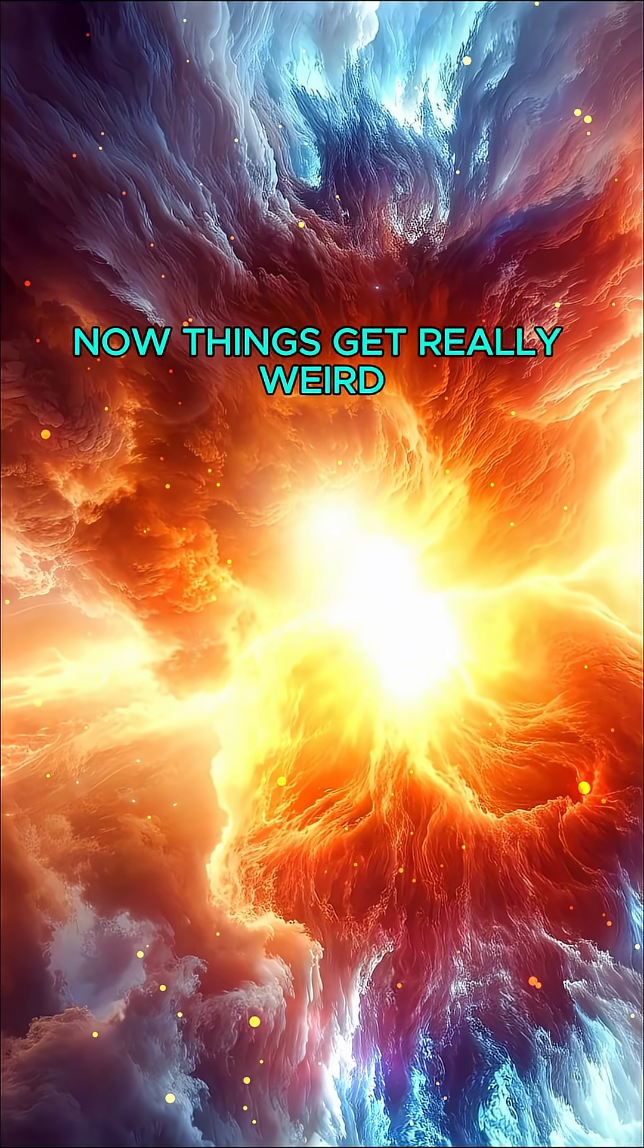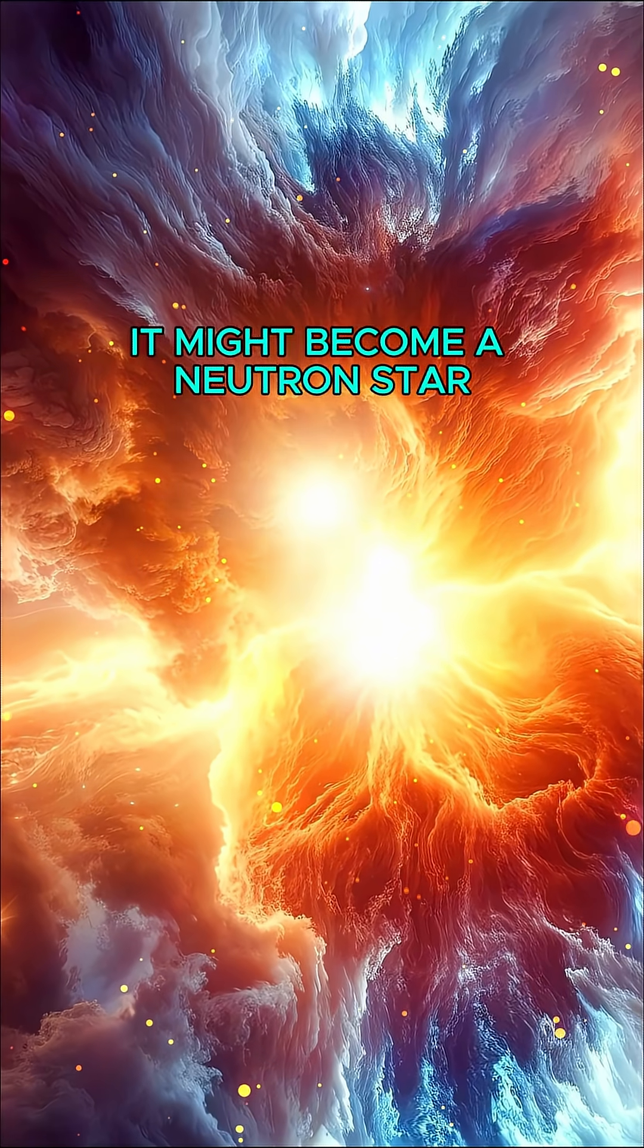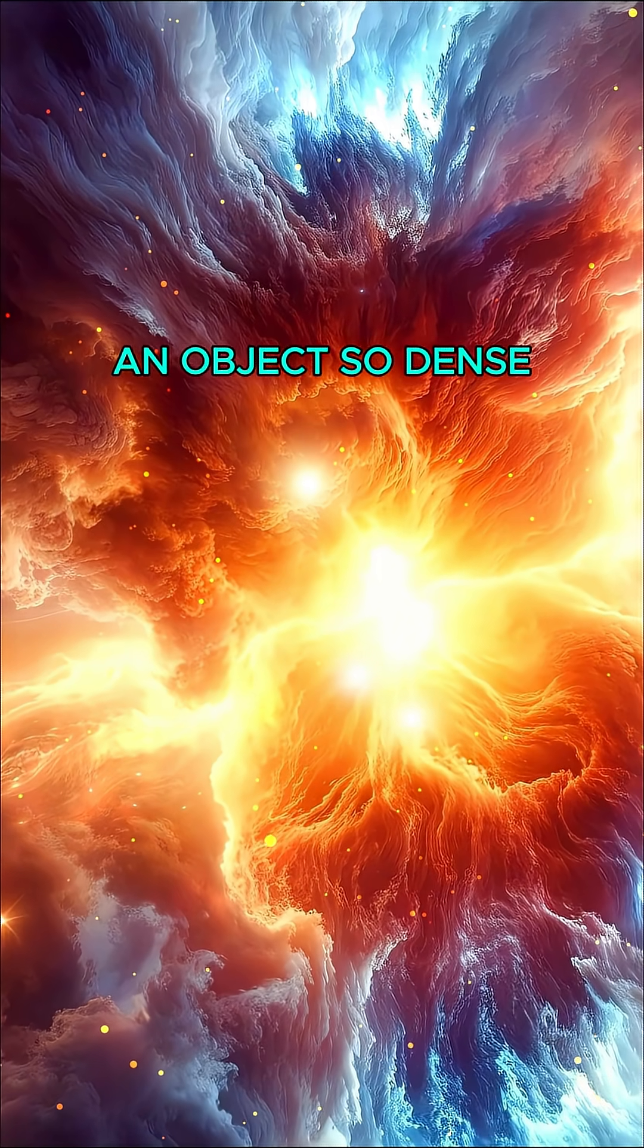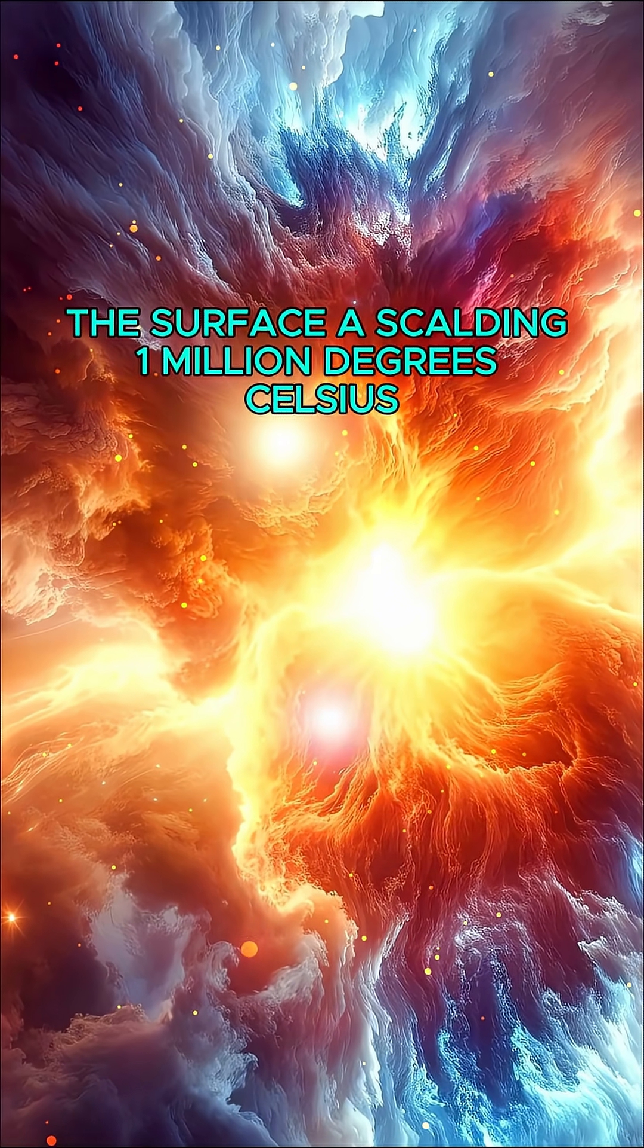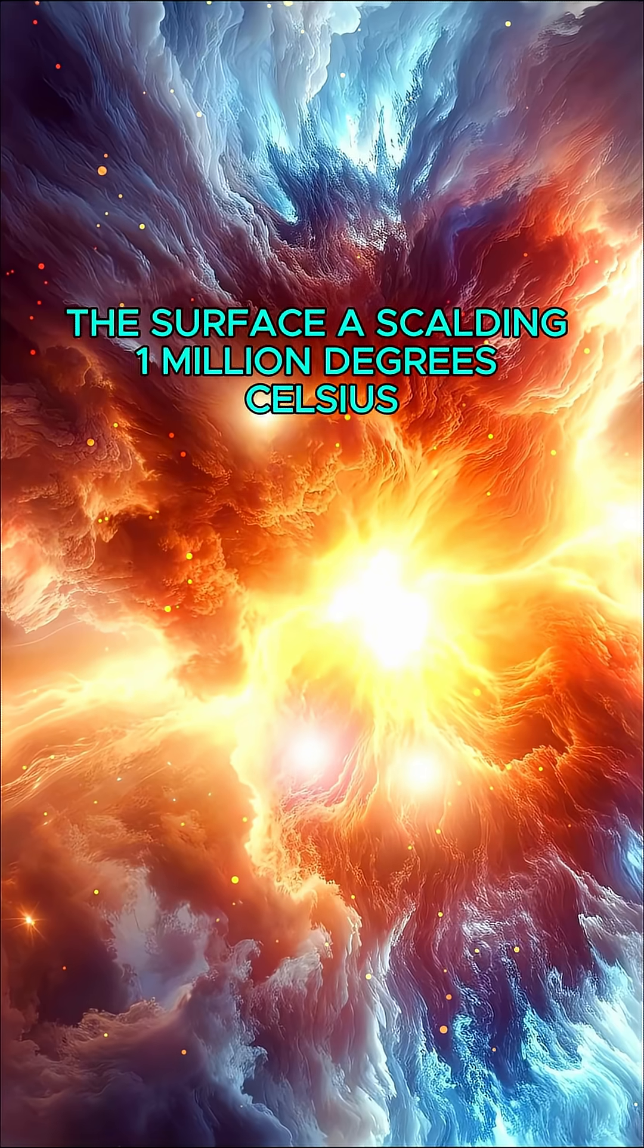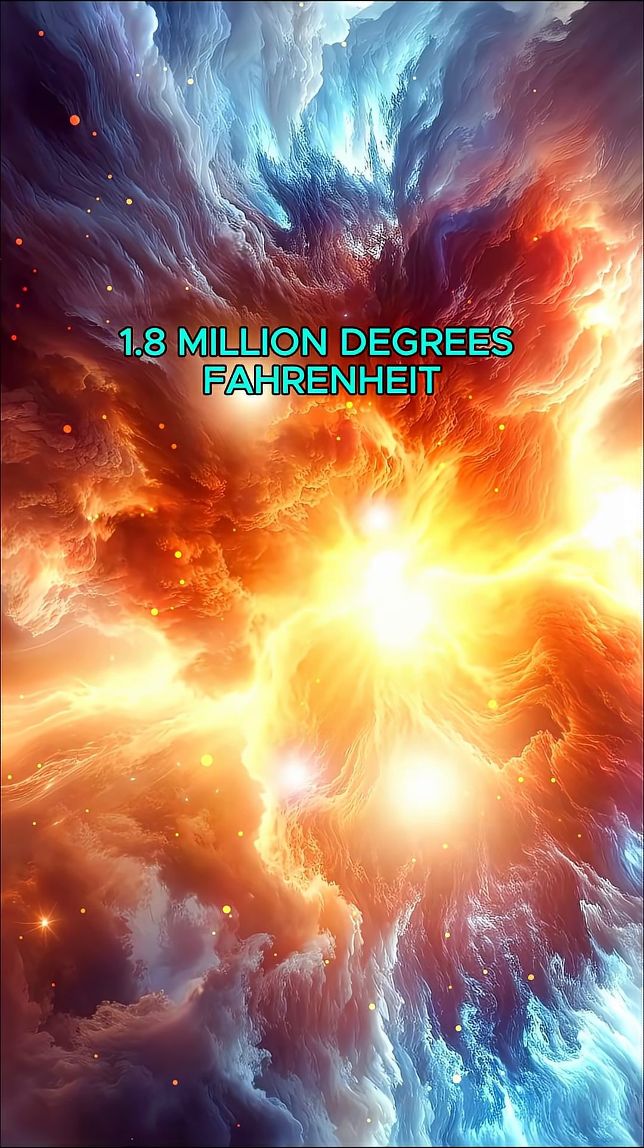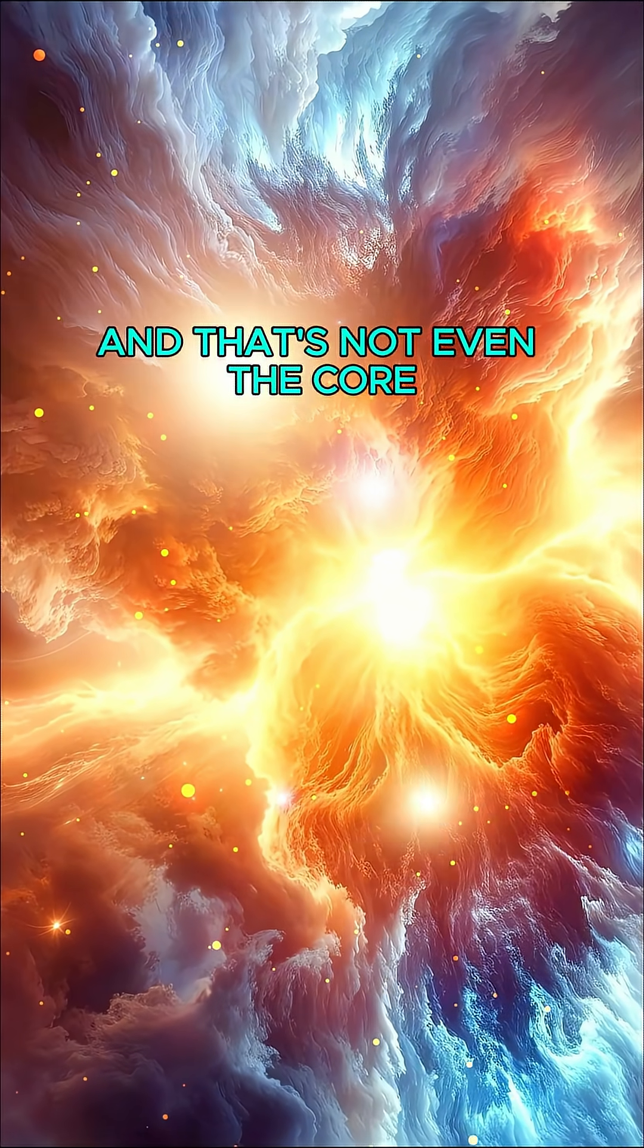Now, things get really weird. After a massive star collapses, it might become a neutron star. An object so dense that atoms are crushed into a sea of neutrons. The surface? A scalding 1 million degrees Celsius, 1.8 million degrees Fahrenheit. And that's not even the core.